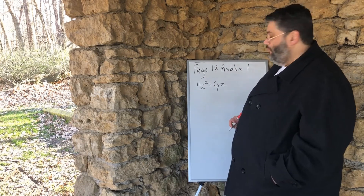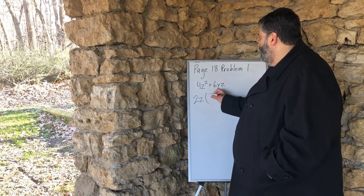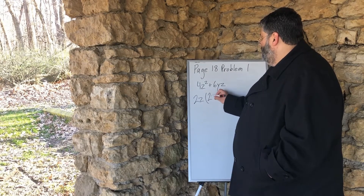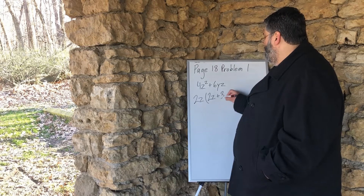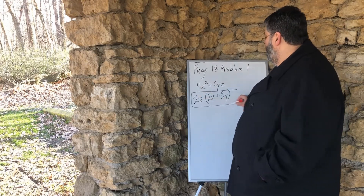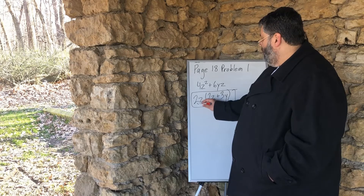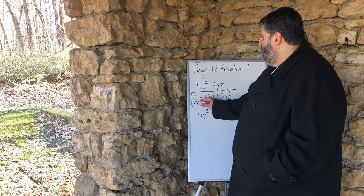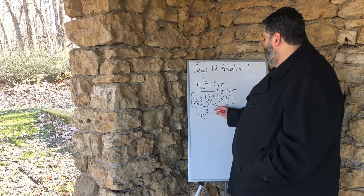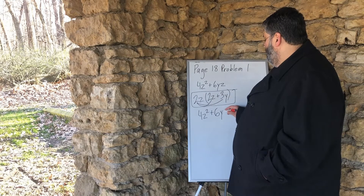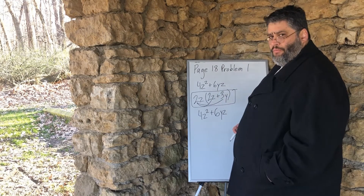So we're going to factor out a 2z here. This is 2z times (2z + 3y). The way we know that is correct: when we multiply 2z by 2z, we get 4z squared. When we multiply 2z times 3y, we get plus 6zy — which is exactly what the original problem is. So if you got that, you got the right answer.